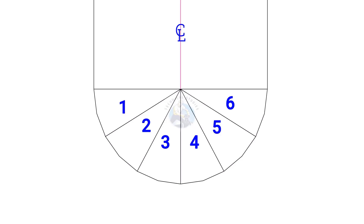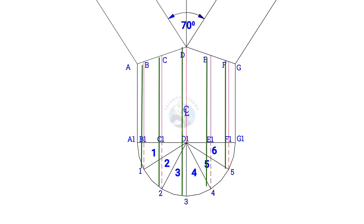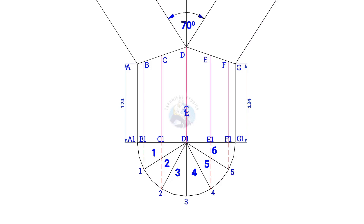Divide the half circle into 6 equal parts. Draw perpendicular lines from points 1, 2, 3, etc. Note down the measurements A, A1, B, E, B1, C, C1, etc.